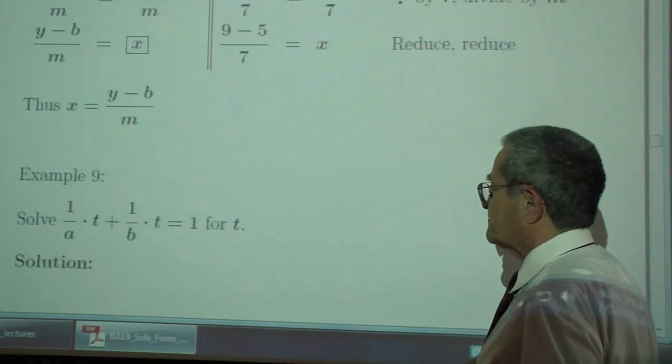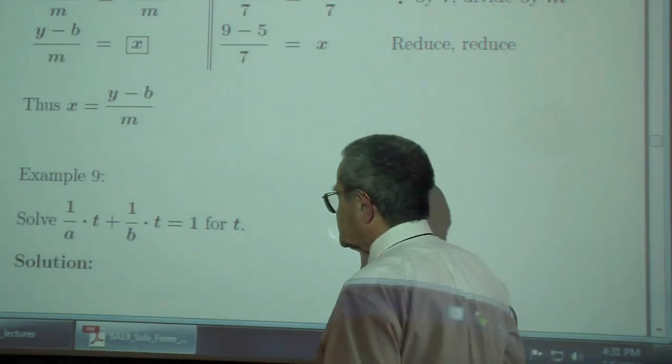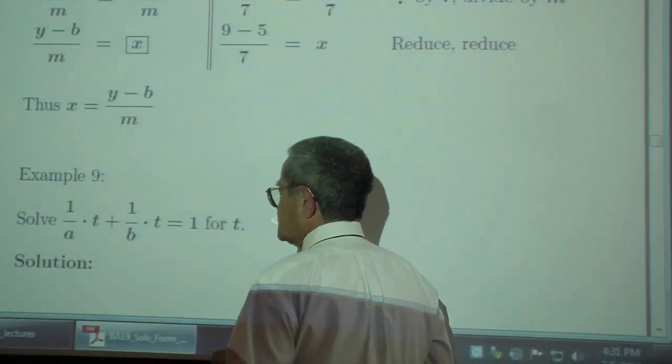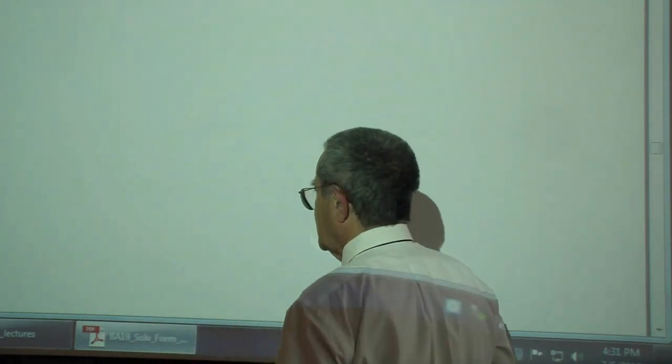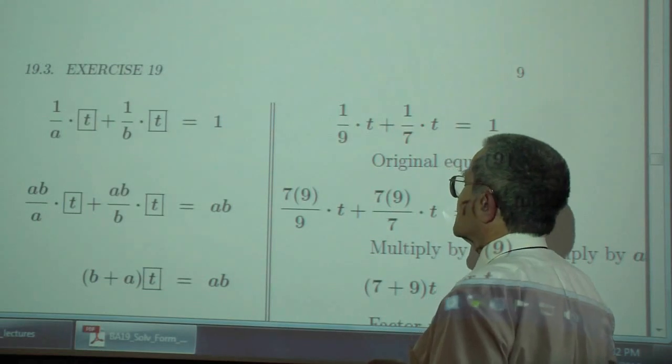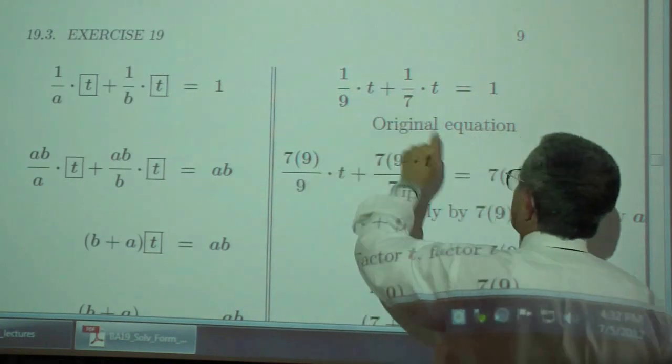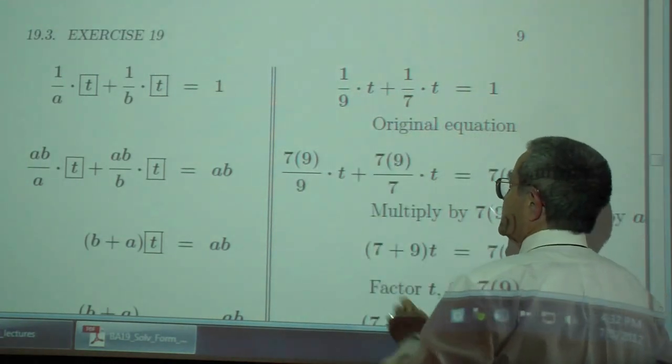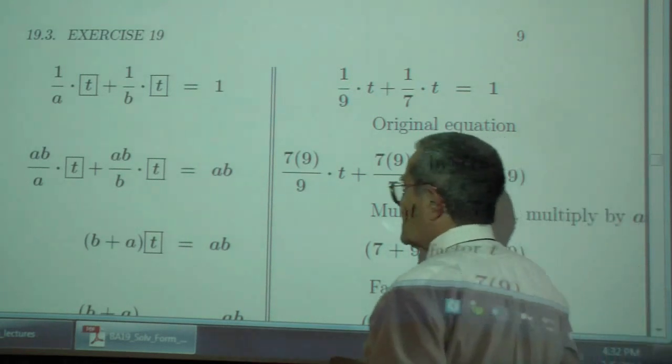Example 9. You want to solve for T. 1 over A times T plus 1 over B times T. This is like T over A plus T over B, which is 1. I guess we want to get rid of the fraction. So, multiply it by the common denominator AB. Multiply it by 7 times 9. That gives you 7T plus 9T, which is equal to 7 times 9.